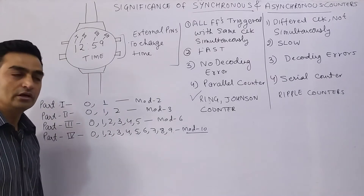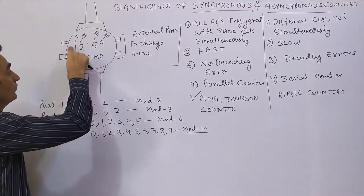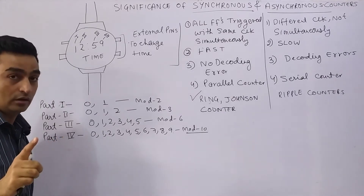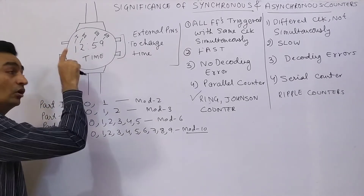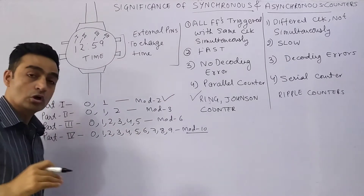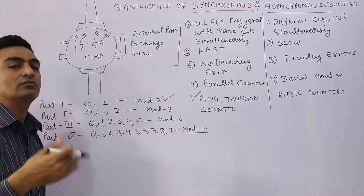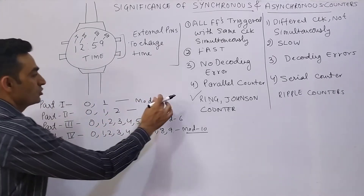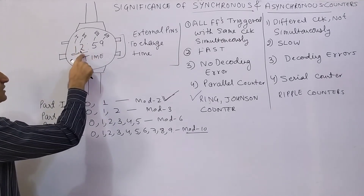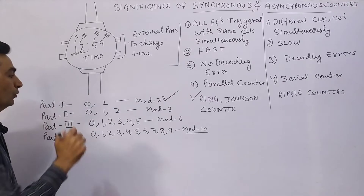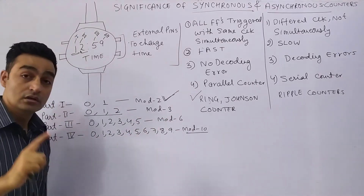If we examine the output display clearly, it is divided into four parts. The first part can be 0 or 1, so it acts as a mode 2 counter — which can be implemented using a synchronous counter. The second part has a maximum count of 2, meaning states 0, 1, 2, so it requires a mode 3 counter.